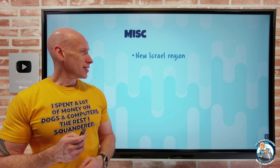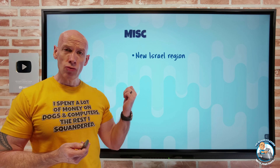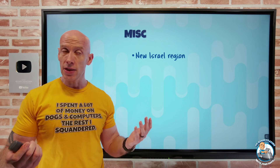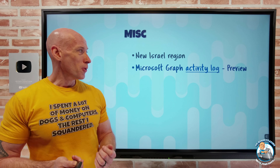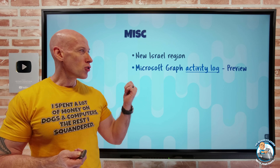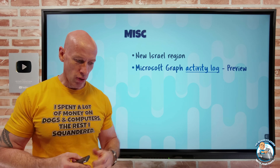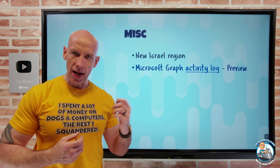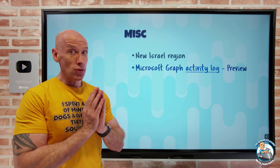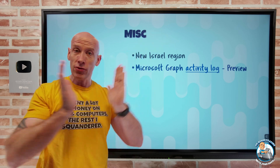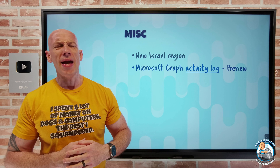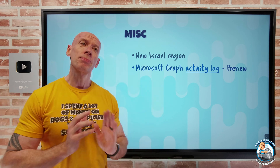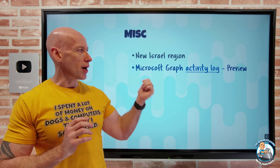Onto the miscellaneous. There's a new Israel region — Israel Central — and that does support availability zones. Also, we now have the Microsoft Graph activity log in preview. This will give you insight into all of those HTTP-based interactions you have with Microsoft Graph. Microsoft Graph integrates with nearly all Microsoft services — from Entra ID to Office to Dynamics — you can interact with all of it through Microsoft Graph.